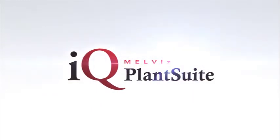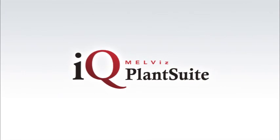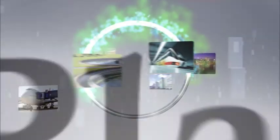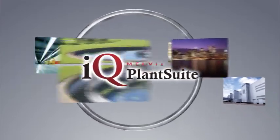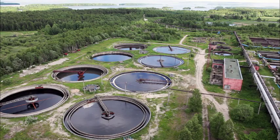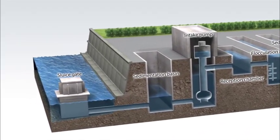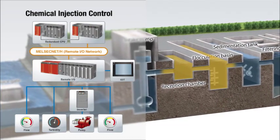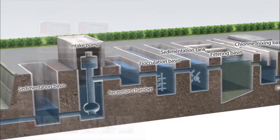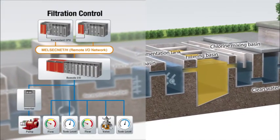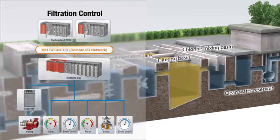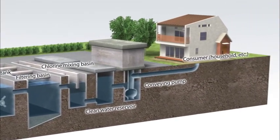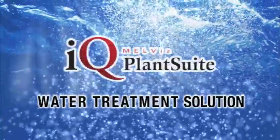MELVIS iQ Plant Suite supports a diverse range of social infrastructure systems. Today, we will show its application at a water treatment plant. iQ Plant Suite ensures high reliability with excellent cost performance using Mitsubishi Electric's redundant CPUs and a CC-Link IE 1Gbps high availability network. Combining these two key technologies allows the plant to continue operation even in the event of trouble.